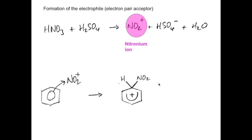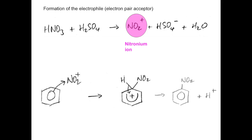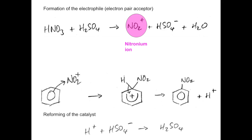Then that stabilises itself by a pair of electrons from the carbon-hydrogen bond going back into the ring — we represent it with that curly arrow there. The products are nitrobenzene, and we get an H+ ion produced as well. The final part of the mechanism is to regenerate the catalyst, so the H+ ion and the HSO4- ion combine and form sulfuric acid.